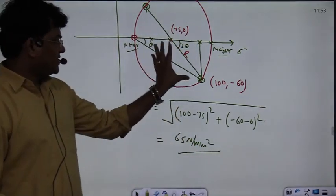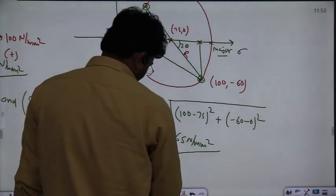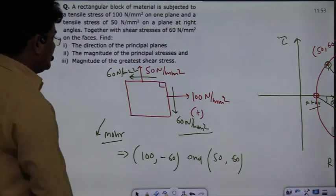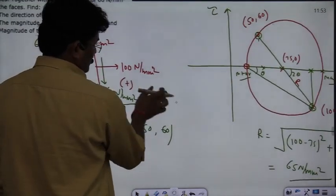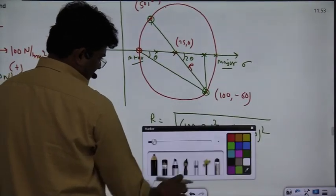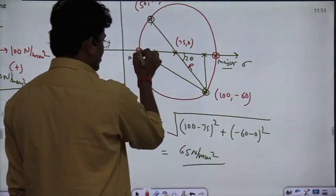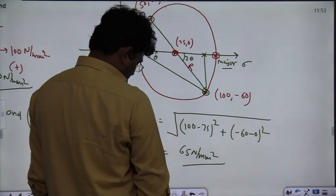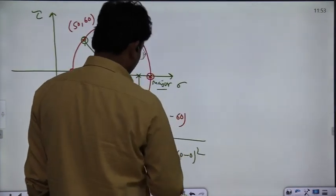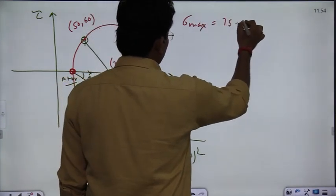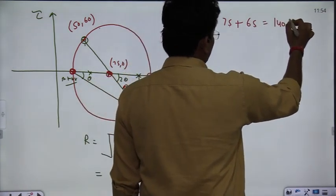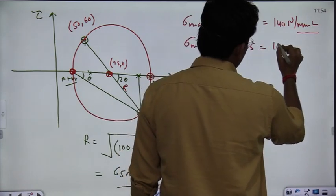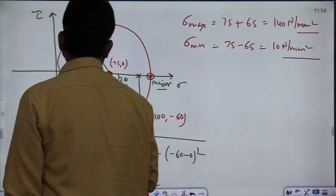This gives us the direction of the principal plane, the magnitude of the principal stresses, and the magnitude of the greatest shear stress. The major principal stress σ_max = center x-coordinate + r = 75 + 65 = 140 N/mm². The minor principal stress σ_min = 75 − 65 = 10 N/mm².